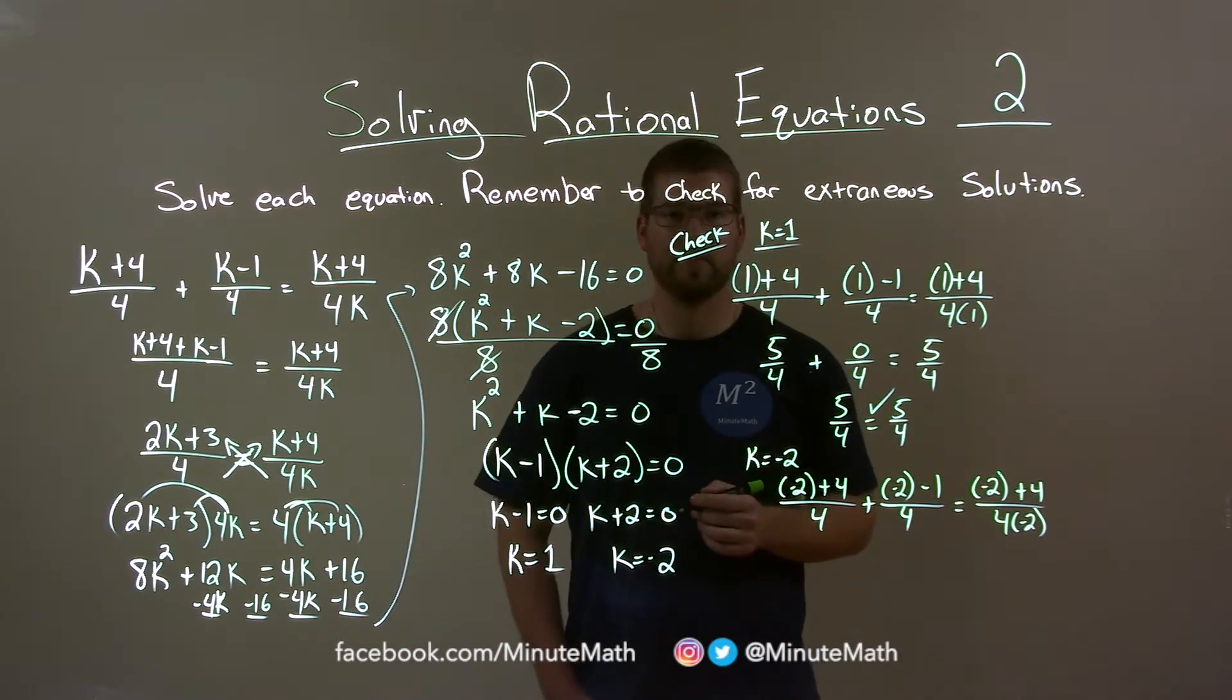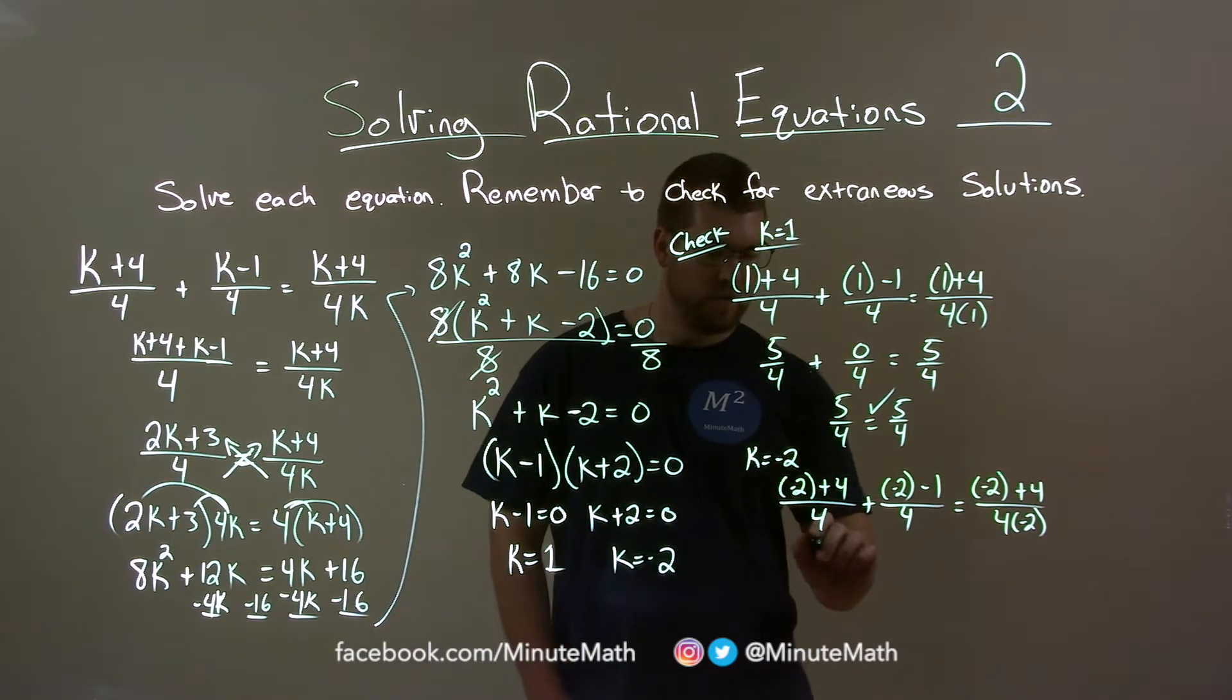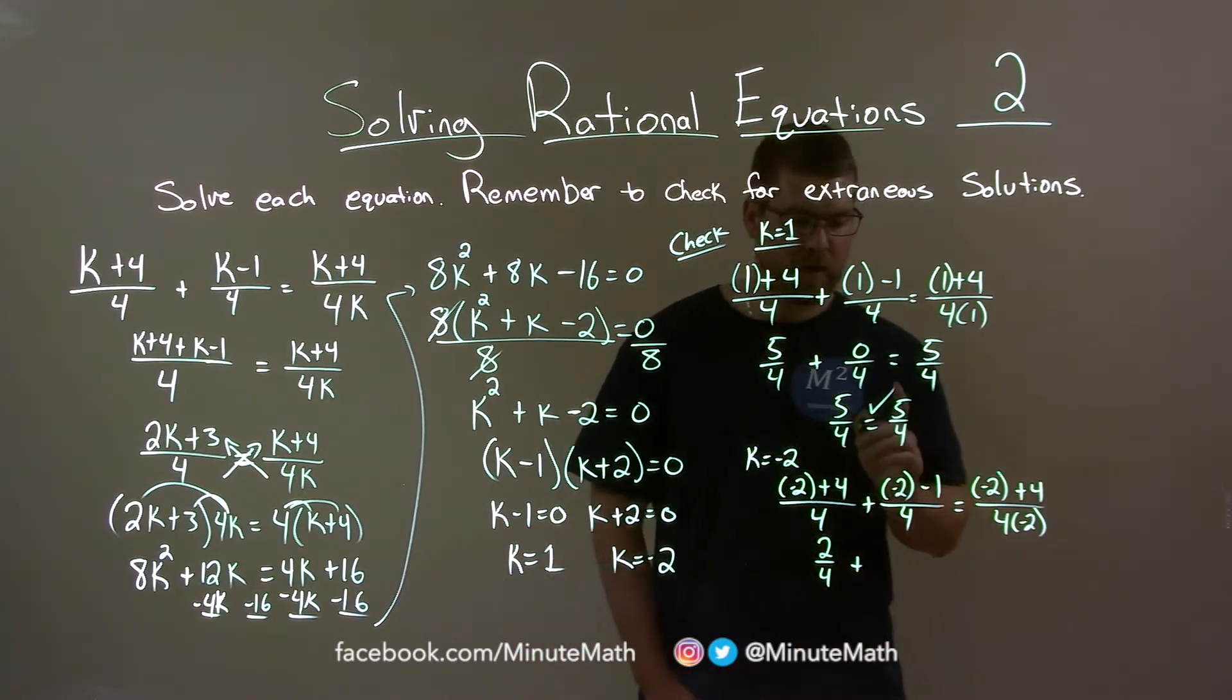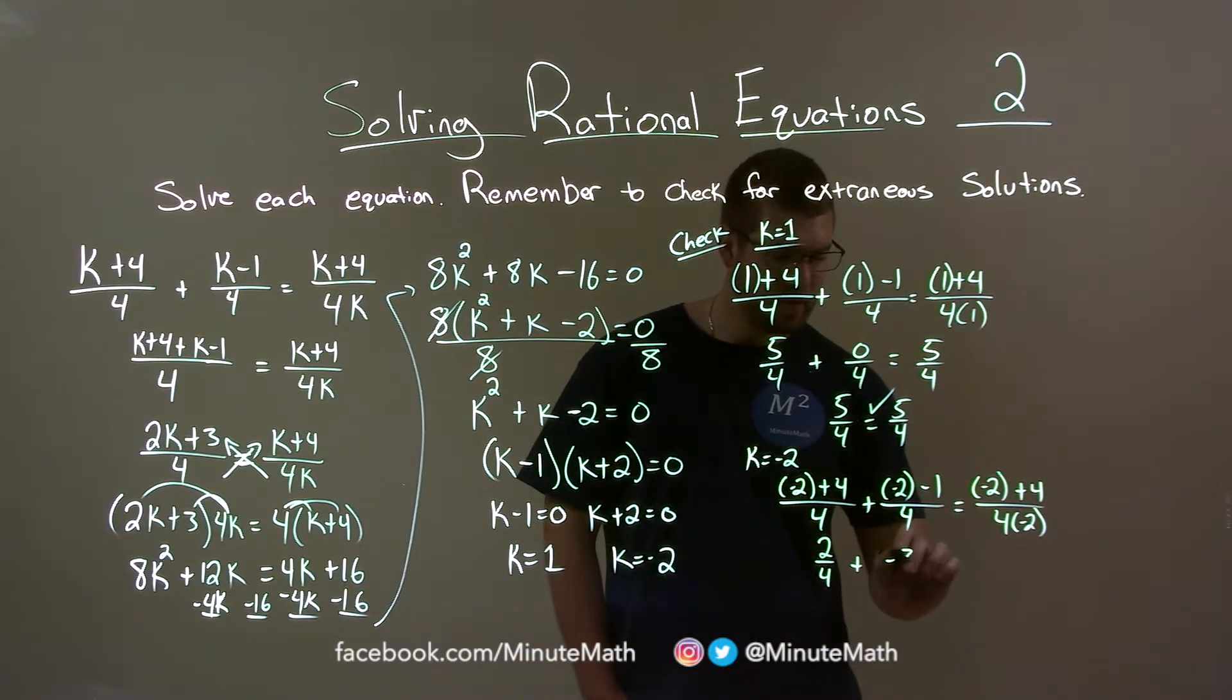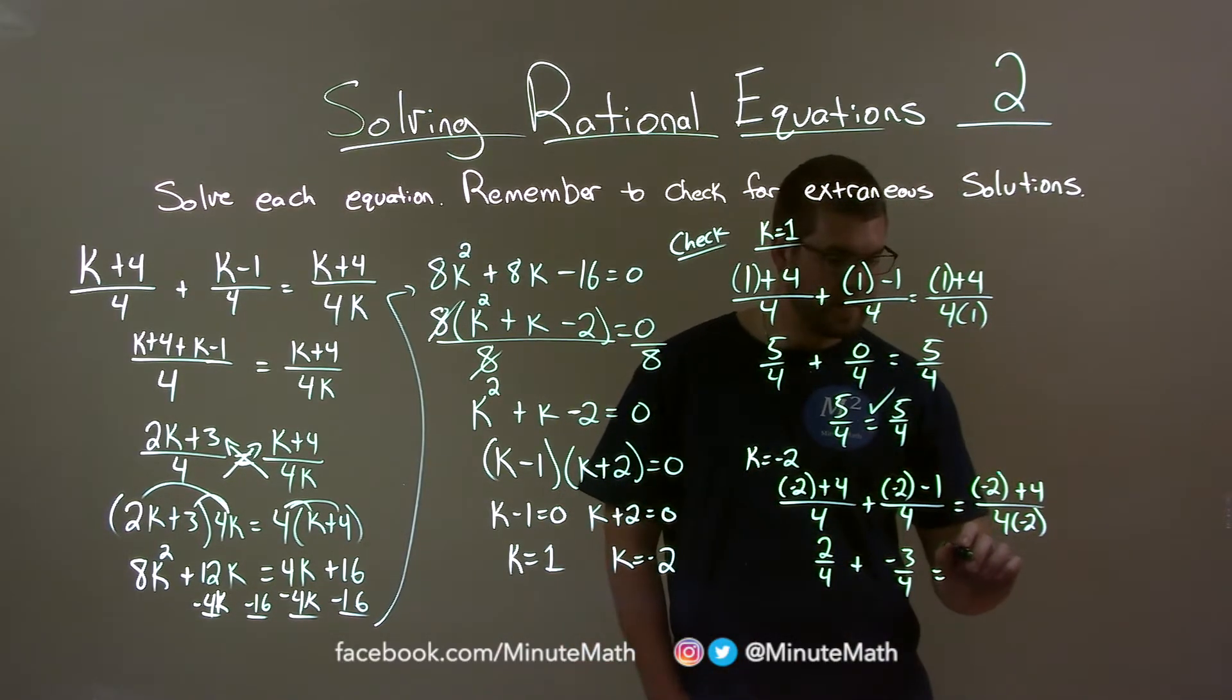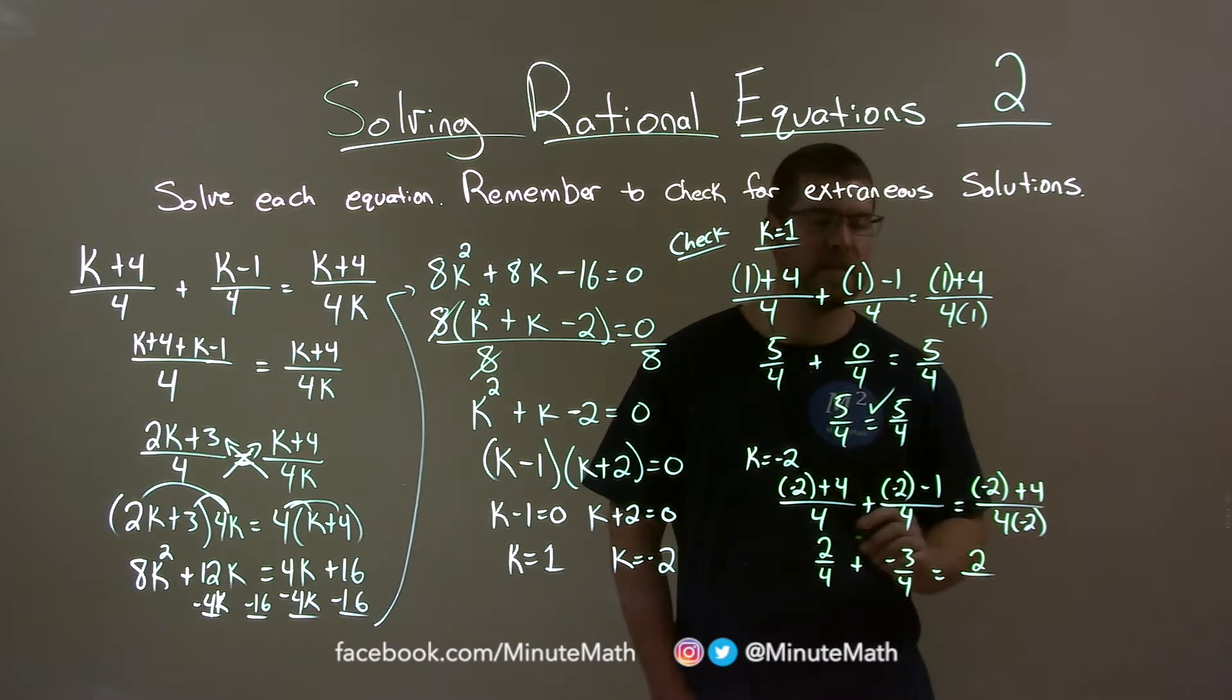So let's simplify. Negative 2 plus 4, that is a positive 2. We have 2 fourths here. Plus negative 2 minus 1 is a negative 3. So we have a negative 3 fourths. Equals negative 2 plus 4 is a positive 2. We have a positive 2 here over 4 times negative 2, a negative 8. So we have a negative 8 here.